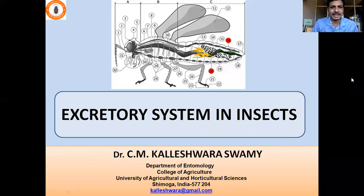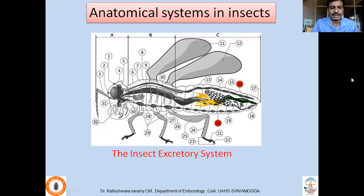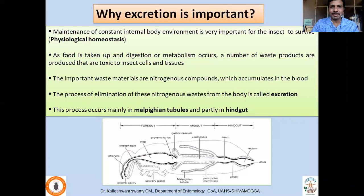In this lecture I will be talking about the excretory system in insects. If you look at the various anatomical systems in insects, the excretory system is located at the junction of midgut and hindgut. That means the chief excretory organs, the Malpighian tubules, are located at the junction of midgut and hindgut, so they are in close association with the digestive system.